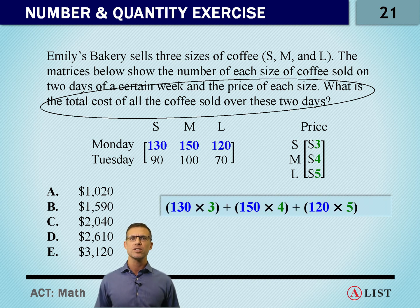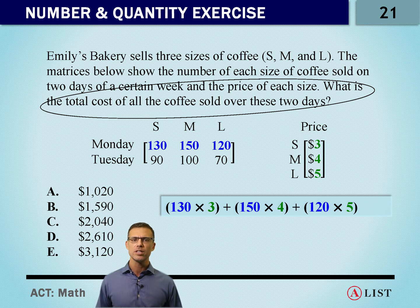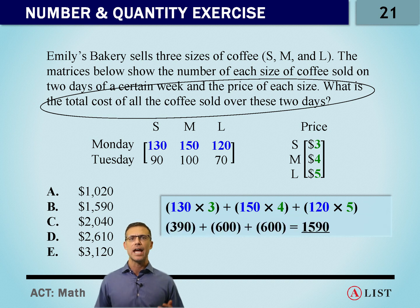So we have 130 smalls, that's times three dollars each, 150 mediums, that's times four dollars each, and 120 larges times five dollars each. We add them all together and we get $1,590.